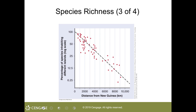Species richness is inversely related to geographic isolation of a community. Isolated island communities are generally much less diverse than communities in similar environments found on continents. This difference is due partly to the distance effect — the difficulty encountered by many species in reaching and successfully colonizing the island. Sometimes species become locally extinct as a result of random events, and in isolated habitats such as islands or mountaintops, locally extinct species are not readily replaced. Those isolated areas are usually small and have fewer potential ecological niches.